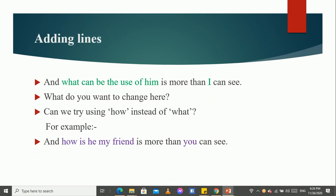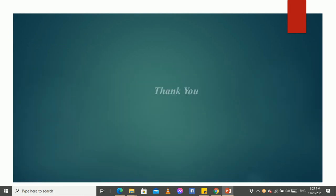Another line. And what can be the use of him is more than I can see. So, another what can be the use of him. In the place of that sentence, what do you want to change here? Can we try using how instead of what? For example, and how is he my friend is more than you can see. Like this, different lines we can add. Thank you very much.